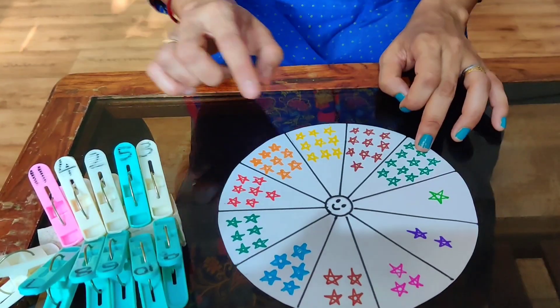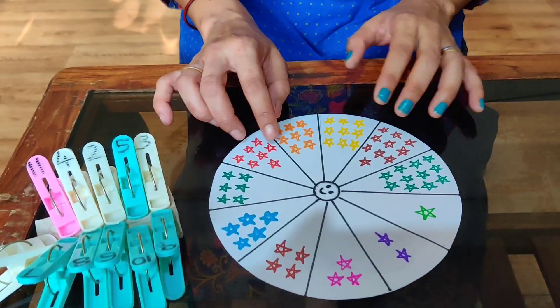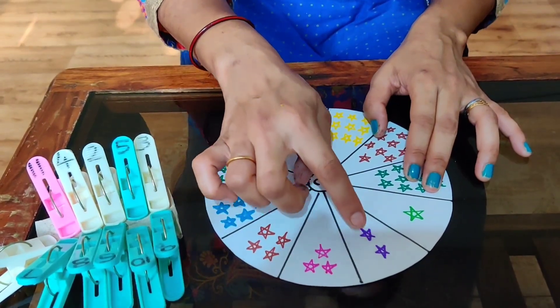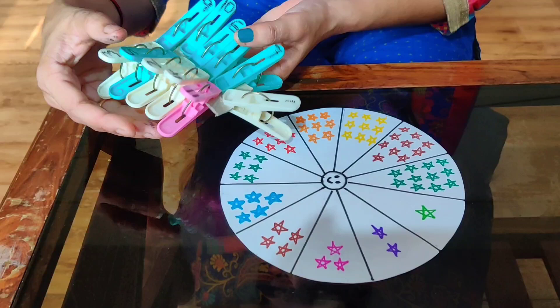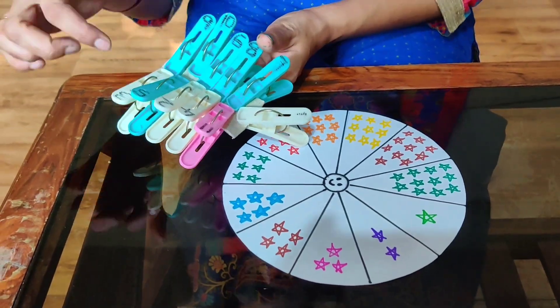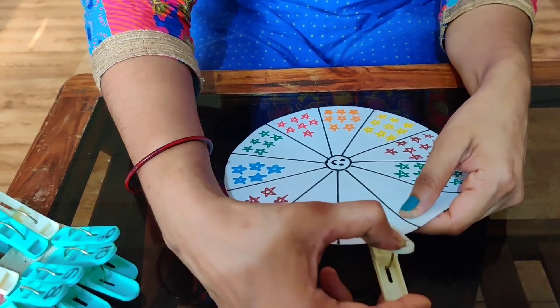Then ask your kid to count the number of stars present in a particular section. Like here, if it is 2 stars, 1 and 2. Then they have to find it out. Where is number 2 clip? Oh, here it is. They have to remove this clip and set it here.